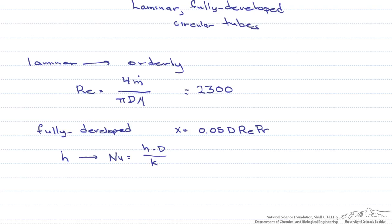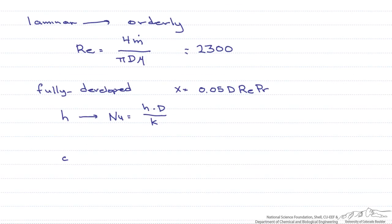For this particular type of flow we have two different Nusselt number correlations. If we have constant heat flux along the tube then the Nusselt number is simply 4.36. If we have constant surface temperature along the tube then our Nusselt number is 3.66.